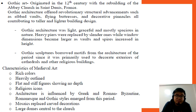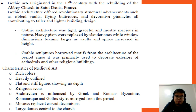Characteristics of medieval arts include: rich colors, heavily outlined, flat and stiff figures showing no depth, religious icons, architecture influenced by Greek and Roman styles. Byzantine, Romanesque, and Gothic styles emerged from this period. Mosaics replaced carved decorations, and large domes are central to the church.